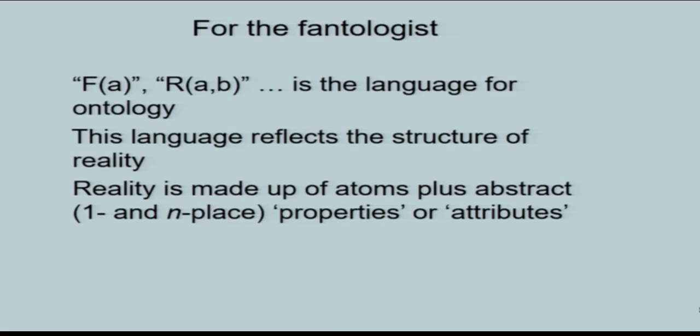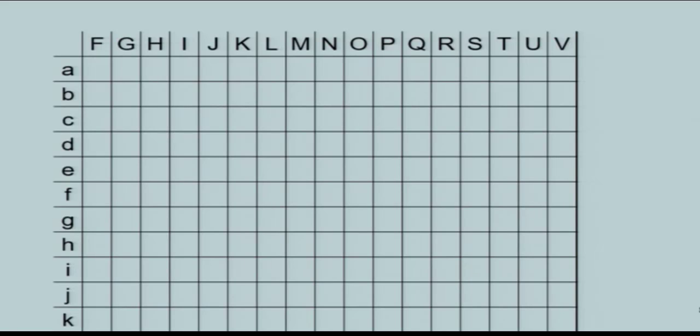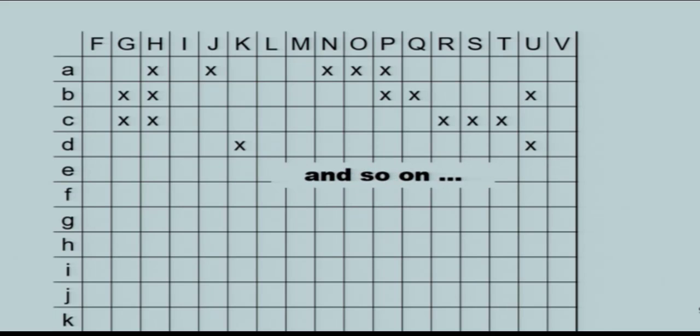Frege was a phantologist. The most prominent example of phantology is David Armstrong's spreadsheet ontology. He said this could be used to create a picture of the world. We list all the predicates along the horizontal axis and all the proper names along the vertical axis. We give a name to every single atom, every single boson, every single sense datum, anything which exists. We give a name to it, and then we list all the predicates that it possesses. Eventually, we will have a complete picture of everything that exists.